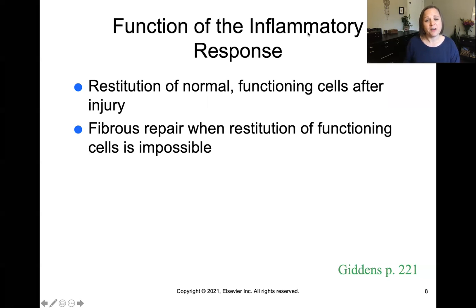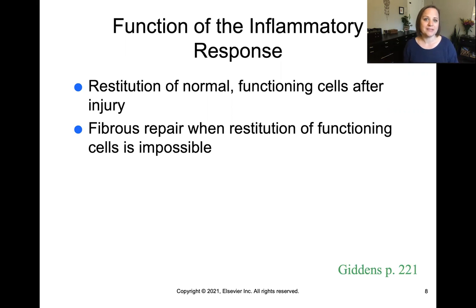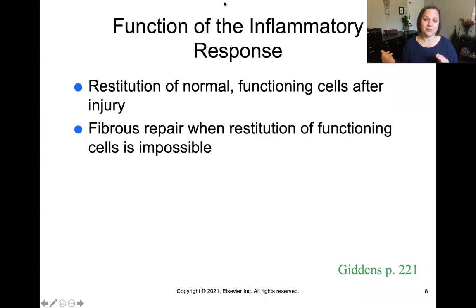The function of the inflammatory response is to restore the normal functioning of cells after injury. Sometimes cells just can't be repaired, so the second goal is to create fibrous tissue — like scar tissue — as a secondary response to injury. The goal is normal repair of normal cells; scar tissue is kind of the backup goal if that can't be accomplished.